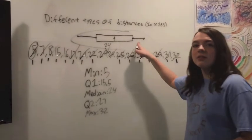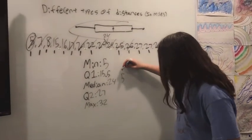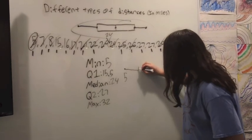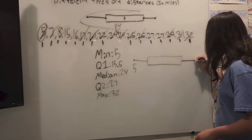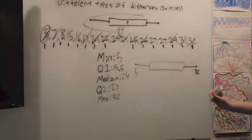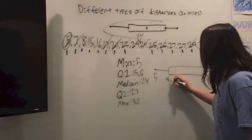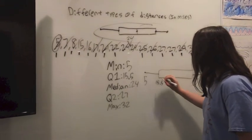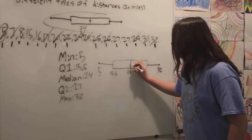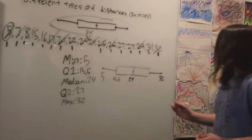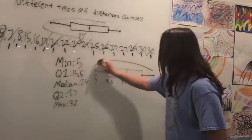Okay, so now we're making the box and whisker plot. First we need to put the median down, and then we need to take the line. Okay, so that's the max. So the first quartile will be 15.5, and then the median will go right here which is 24, and then the last number is the second quartile which is 27. And then this is the answer.